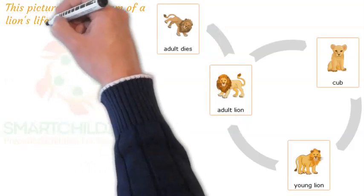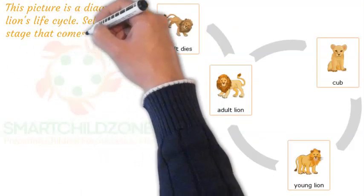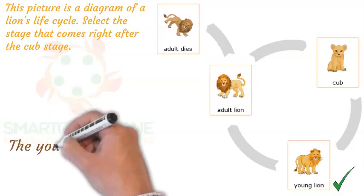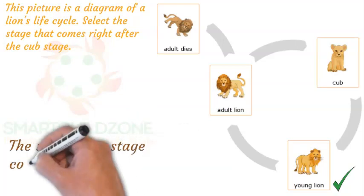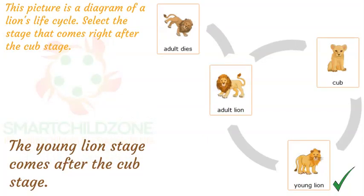This picture is a diagram of a lion's life cycle. Select the stage that comes right after the cub stage. Find the cub stage in the life cycle diagram and follow the life cycle forward. The young lion stage comes after the cub stage.